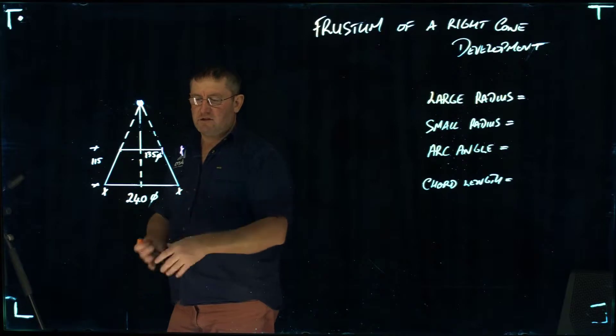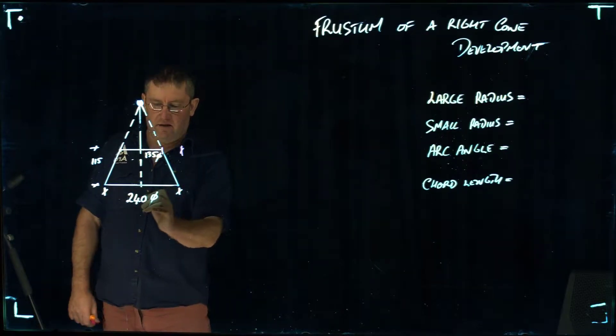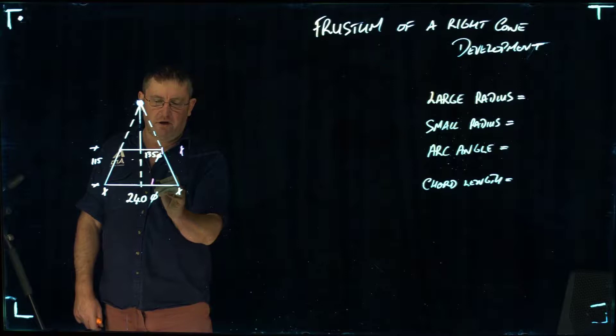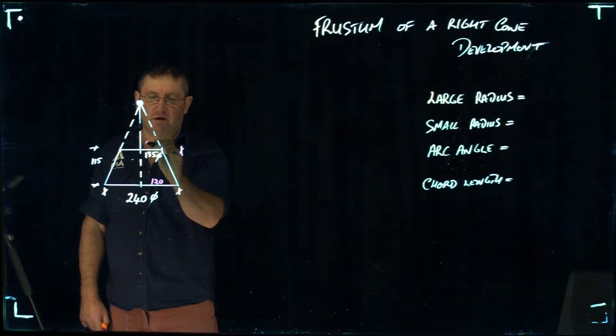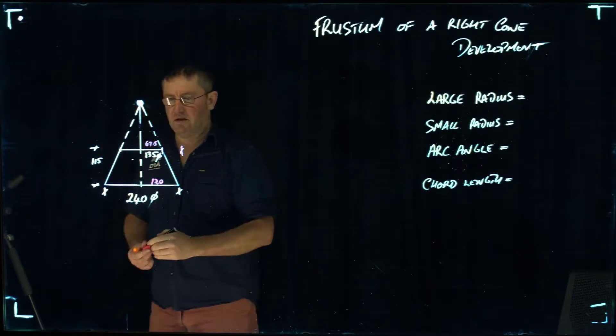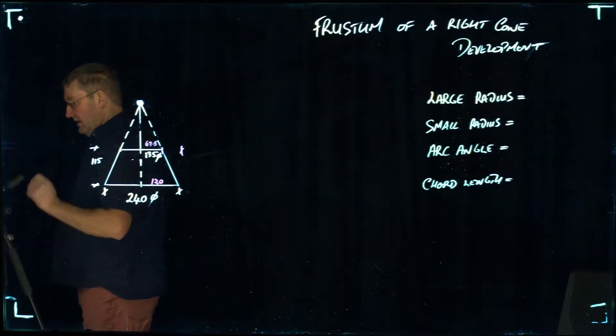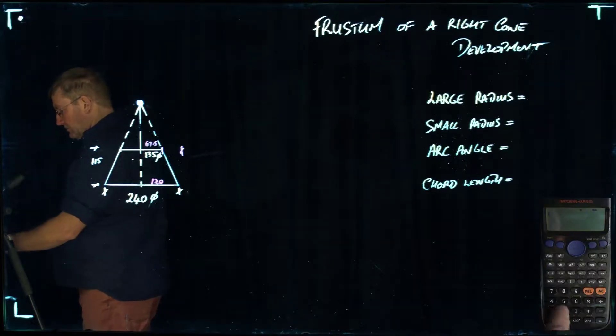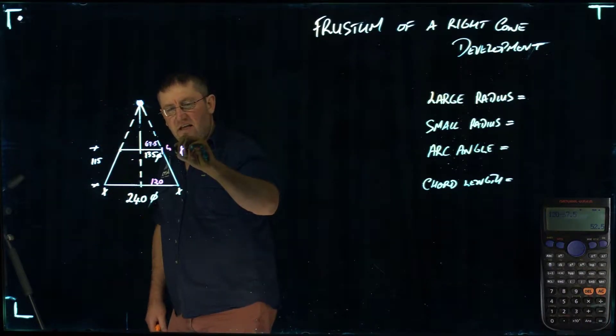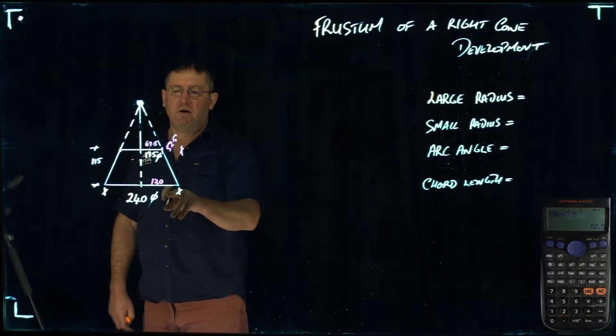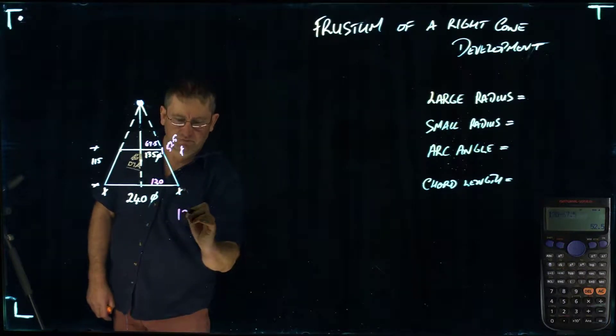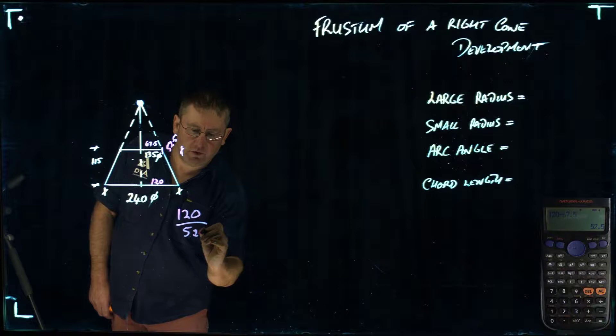I want to work out the difference. If I divide my 240 by 2, I get 120 in here. If I divide my 135 by 2, I get 67.5 at this point. So 120mm minus 67.5 equals, so this distance here is 52.5. From that point, what I need to do is divide the 120 by 52.5.